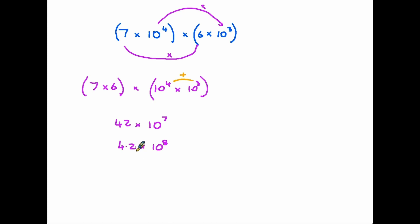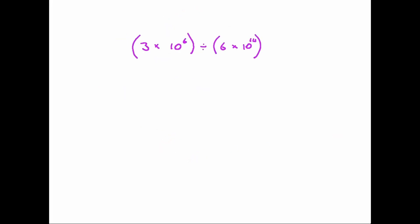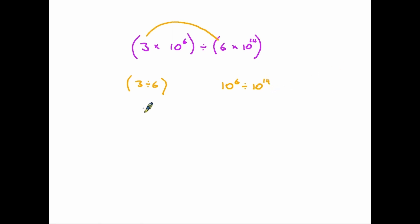A little bit tricky to remember: we need to divide the front number by ten, so we compensate by increasing the power. Now for division: we have three times ten to the power six divided by six times ten to the power fourteen. So three divided by six is zero point five, and ten to the six divided by ten to the fourteen — when dividing we subtract the powers — gives us ten to the minus eight.